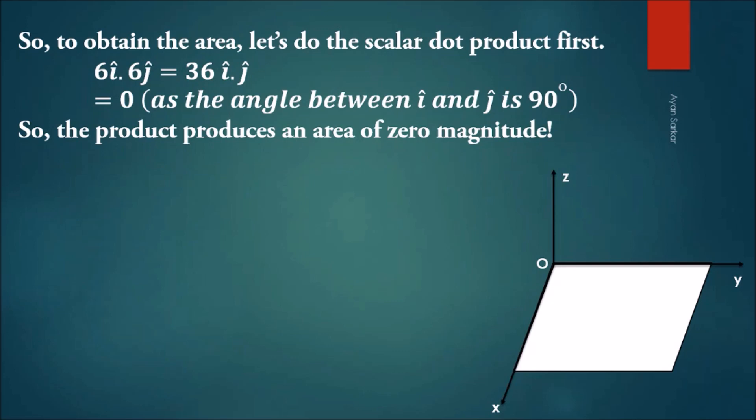The scalar product gives zero, which is wrong. Now let's try the vector cross product.